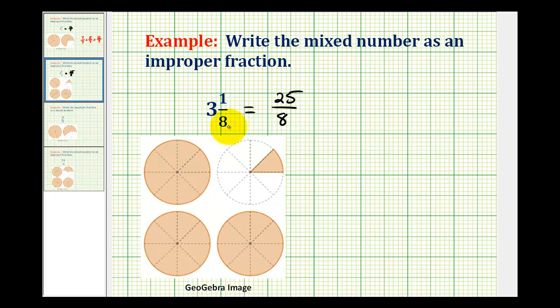Again, if we look at the model for three and one-eighth, notice one is equivalent to eight-eighths. So three is equivalent to twenty-four-eighths, plus one-eighth, is equal to twenty-five-eighths.